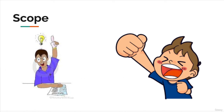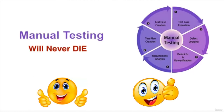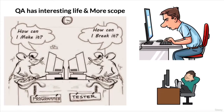Many people ask whether automation testing will kill manual testing scope. The answer is a big no — manual testing will never die. Automation testing can reduce the number of manual testers but cannot completely replace it. The scope of manual testing will always be there.